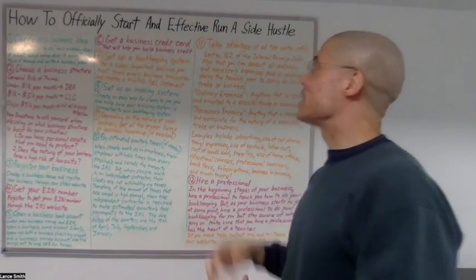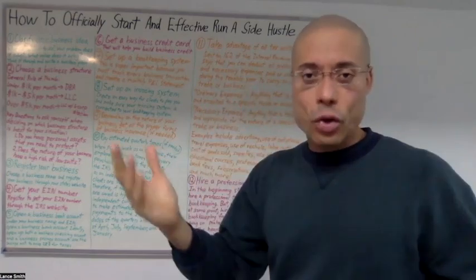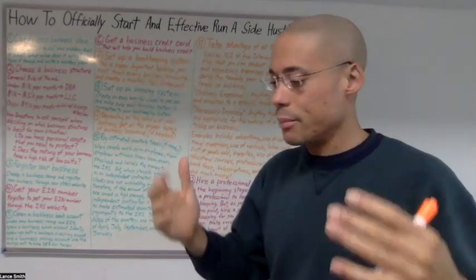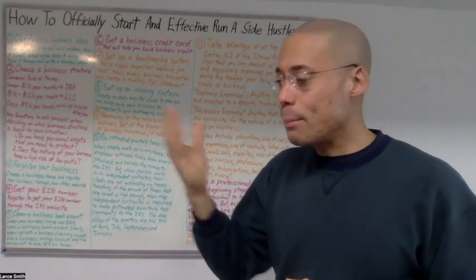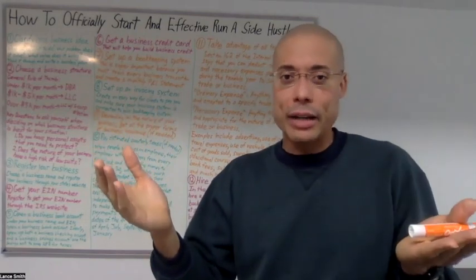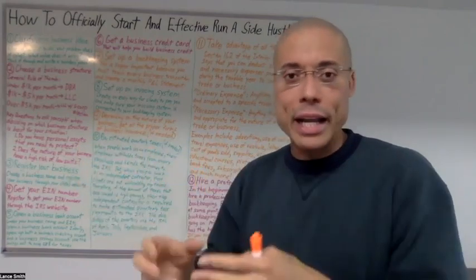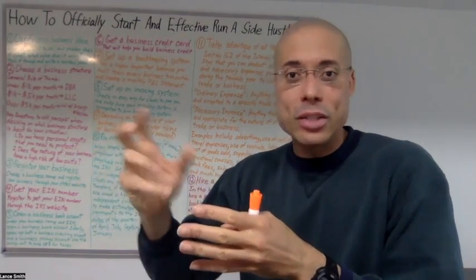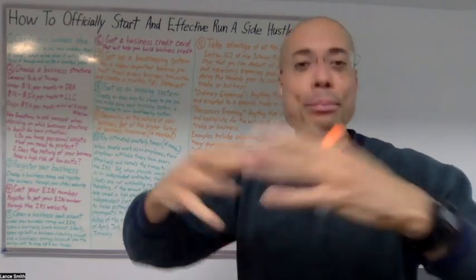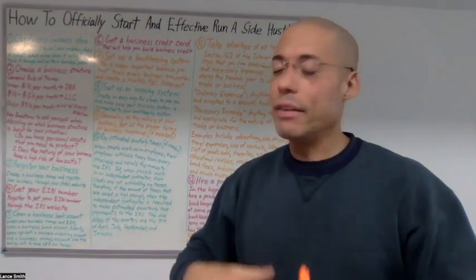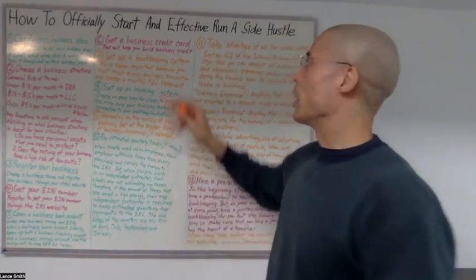Number six, get a business credit card. Getting a business credit card under your business name and EIN number will help you start to build business credit. Business credit is different than personal credit. With your business, you can start to build business credit and have a business credit score, and that opens up more opportunities for leverage.